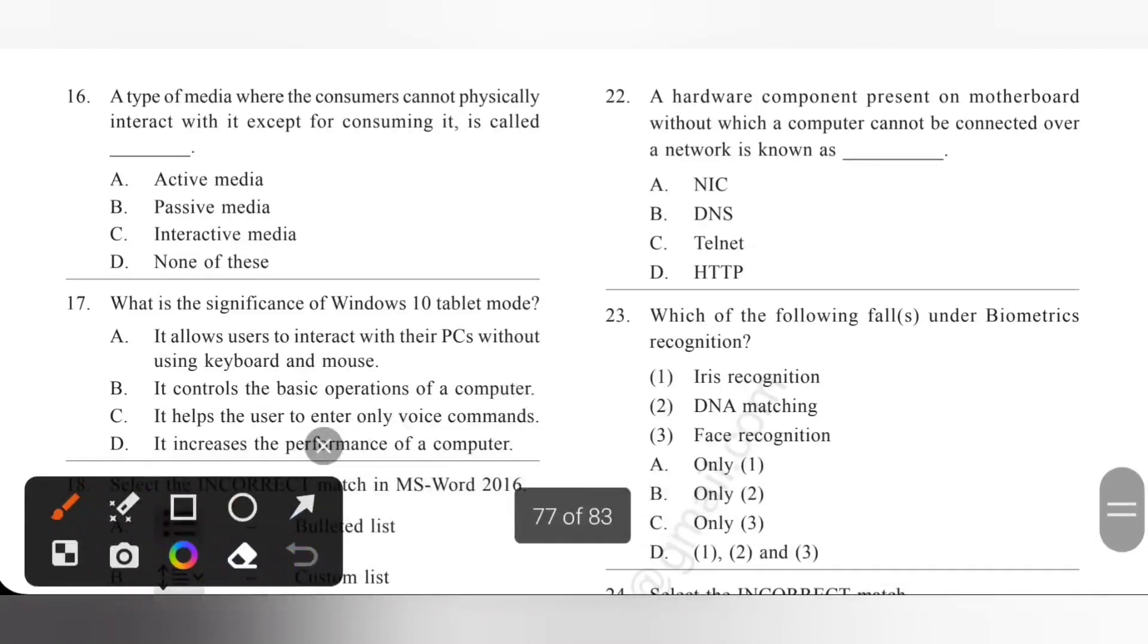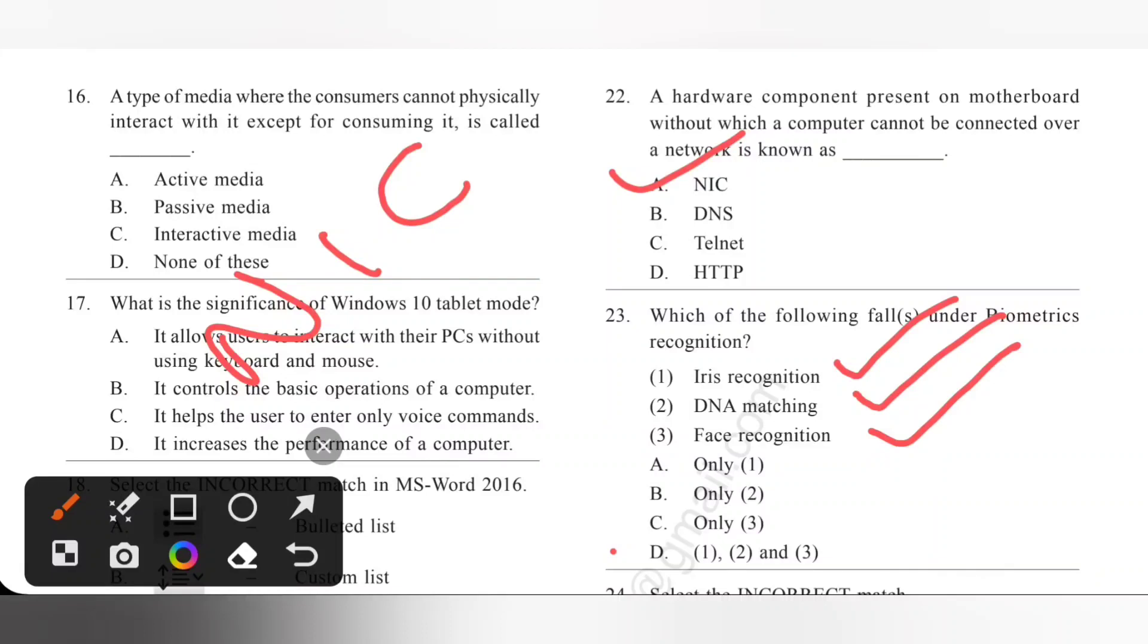22, a hardware component present on motherboard without which a computer cannot be connected over a network is known as NIC, network interface card. It is a hardware component present on motherboard. Without it we cannot connect our computer over a network. Option A is the correct answer. Next 23, which of the following falls under biometrics recognition? 1. Iris recognition, yes. 2. DNA matching, yes. 3. Face recognition, yes. So 1, 2 and 3, all fall under biometrics recognition. Option D is the correct answer.